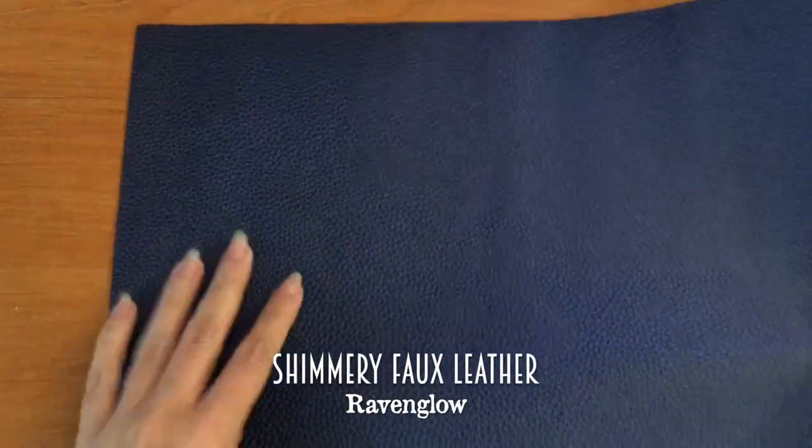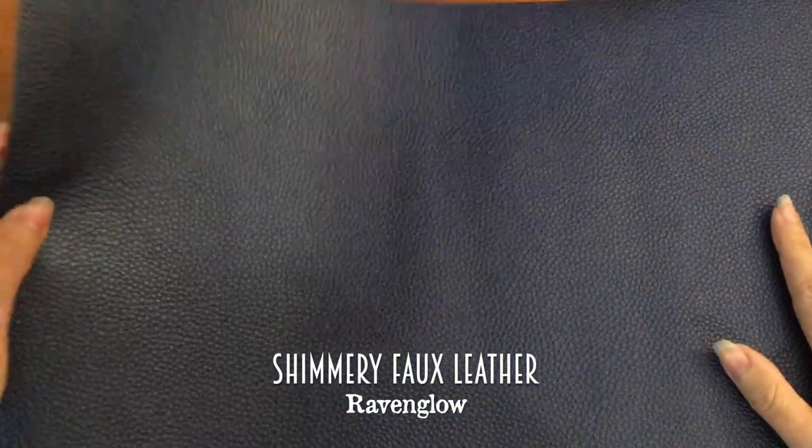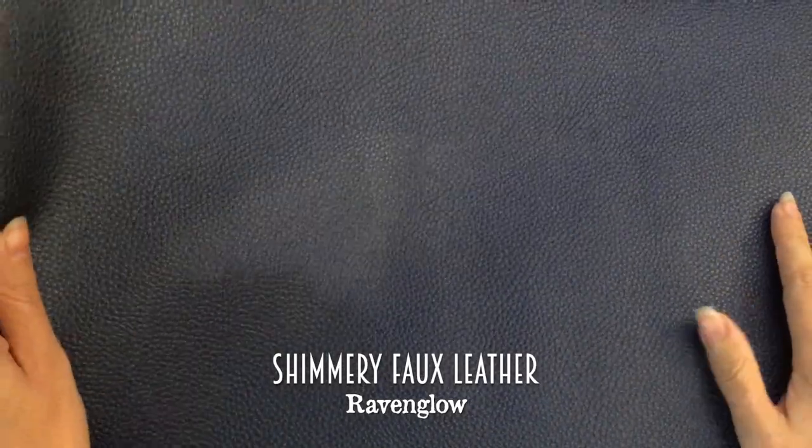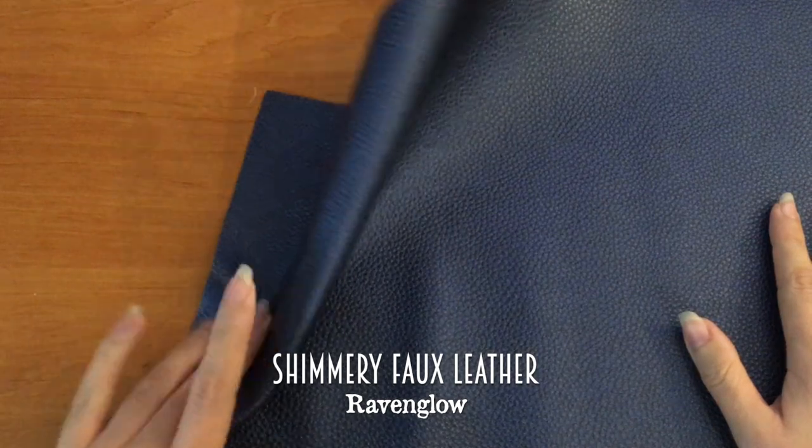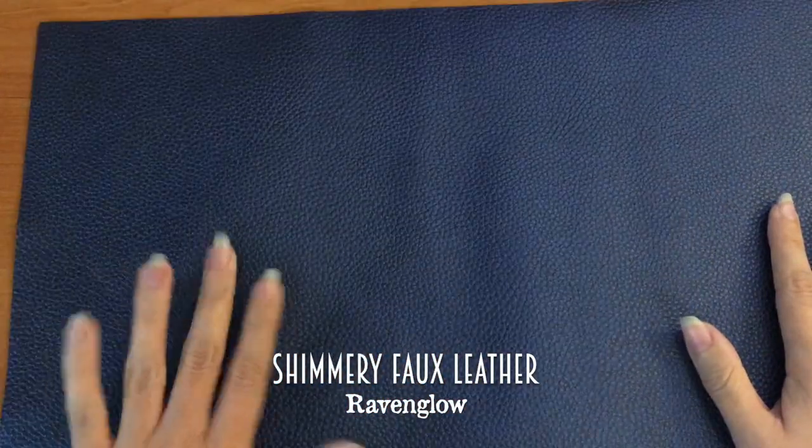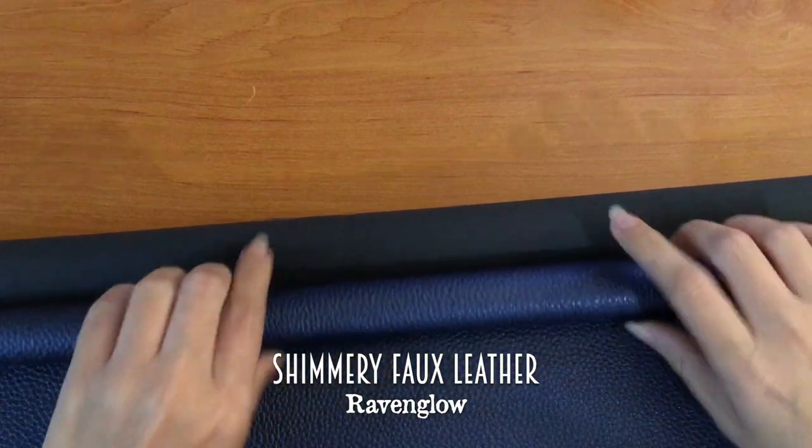So then you have raven glow which is a dark blue. I think it's a bit bluer than what it shows on camera but I don't know if I can show you reflections like this. So yeah dark midnight blue. Very pretty. If you're like me a ravenclaw or if you just like dark blue I mean.